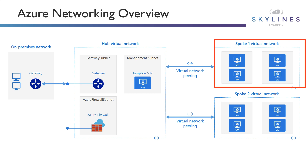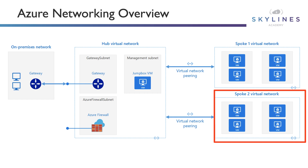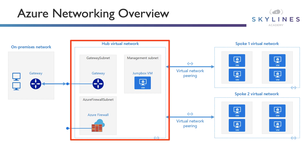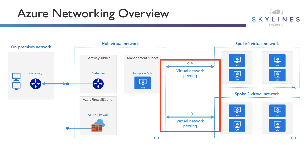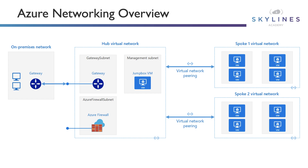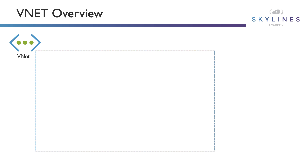What you can see in particular is we have these spokes on the right hand side with spoke one virtual network and spoke two virtual network, and then we have the hub in the middle. These are all connected together through what we call virtual network peering, which we'll go into more detail around later on. This essentially allows us to connect those networks together, so connections from spoke one virtual network — those virtual machines there — can connect into the hub network perhaps for management services, such as an active directory server running in the hub virtual network that those VMs need access to.